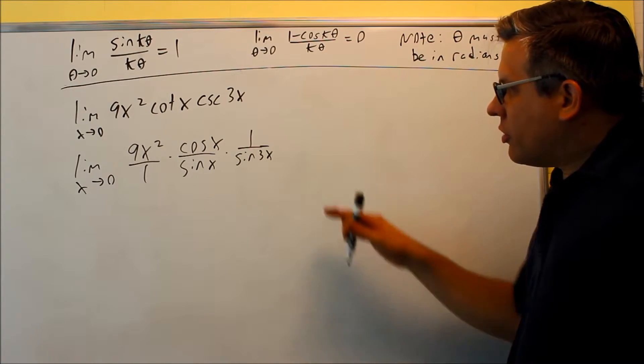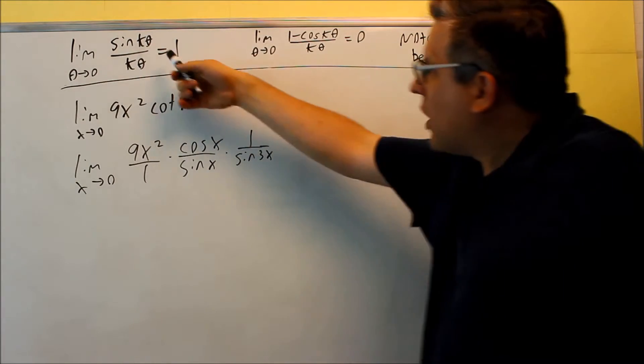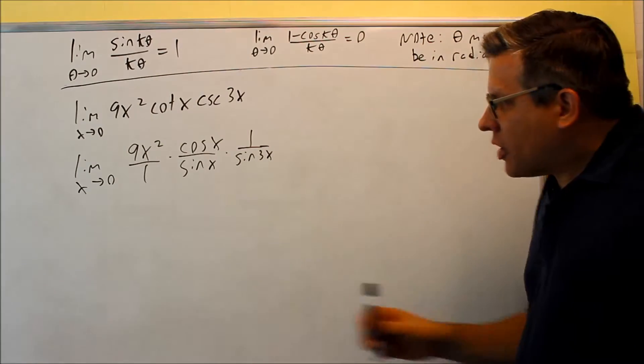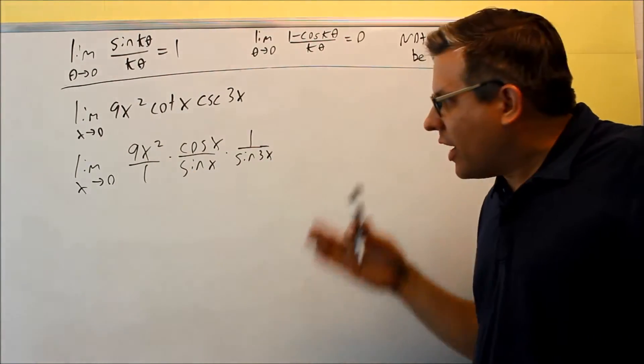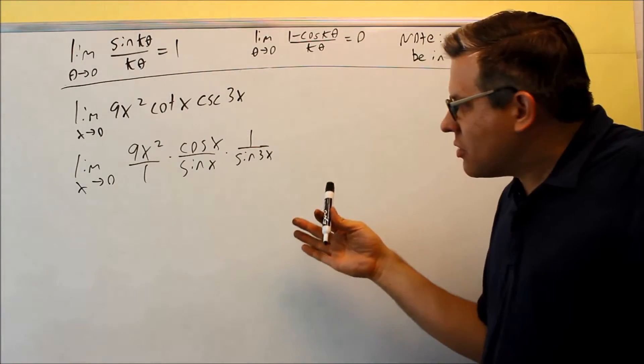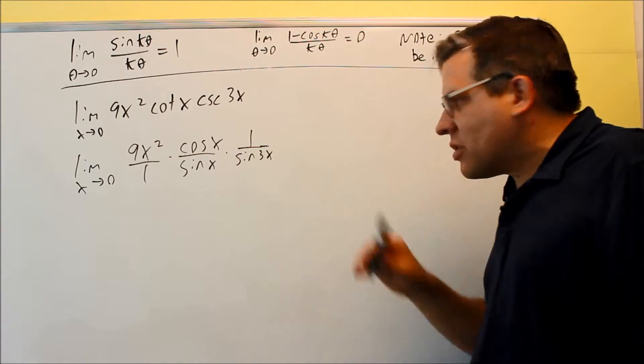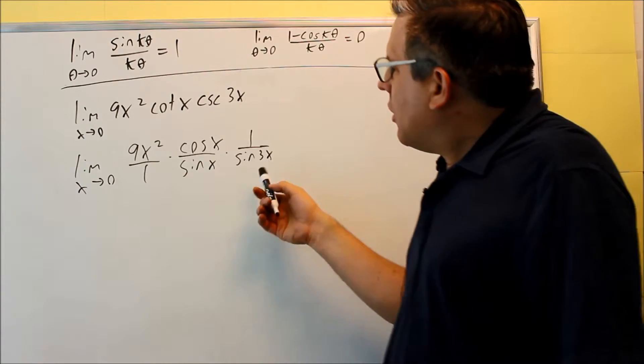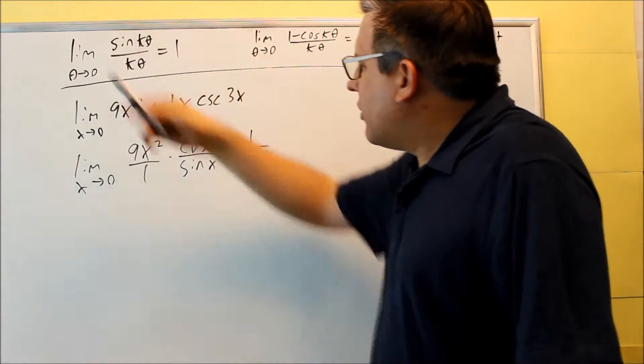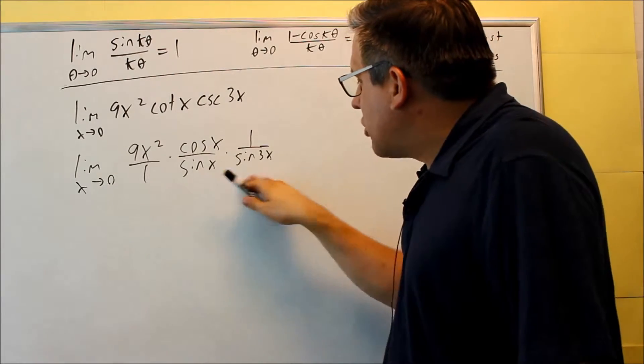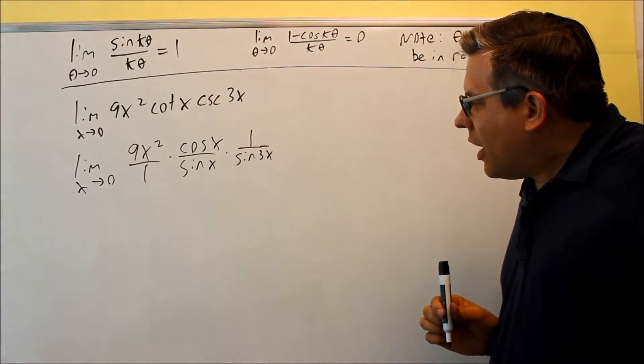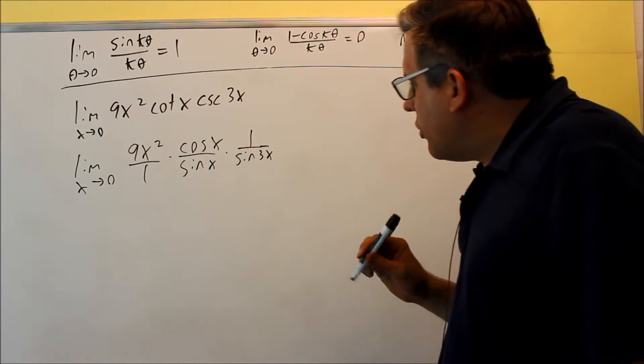Now in order to use this property which eventually is what I'll have to do because if I try plugging in 0 right now sine of 0 is 0. So that's why I need to do more with this because plugging in the 0 as is it's going to be undefined. So I want to try and create this if possible. So I need to get some kind of fraction below each of these in the end.